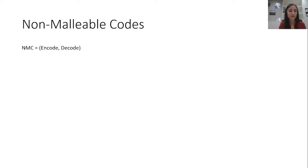The first property we require is called correctness, which means that for every message, when we encode it to get a codeword c, and then decode c, we should get the original message.